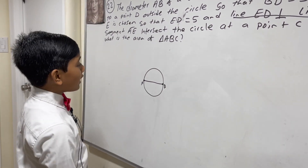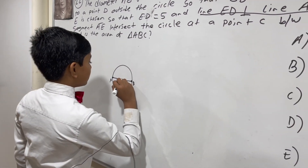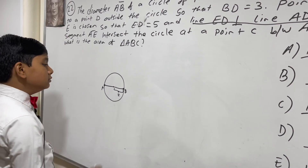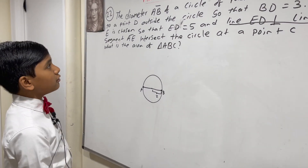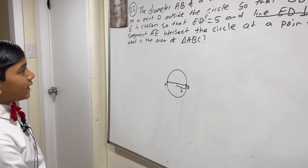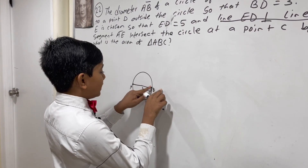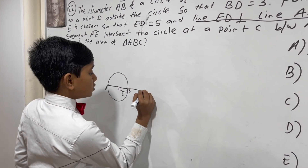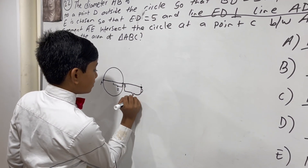So we have A, B, and this length is 2. It is extended to a point D outside the circle, so BD is 3. So this is point D, and this is 3.